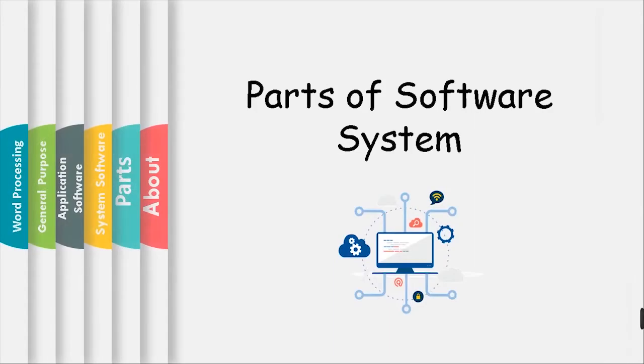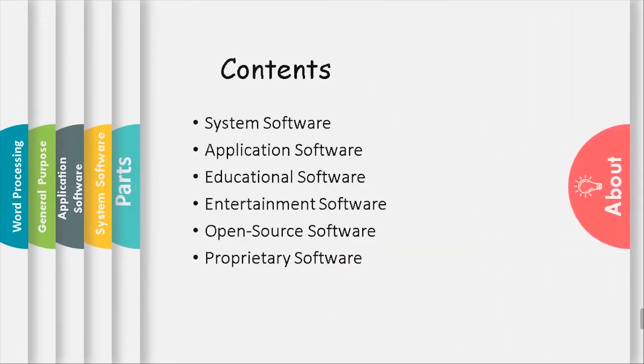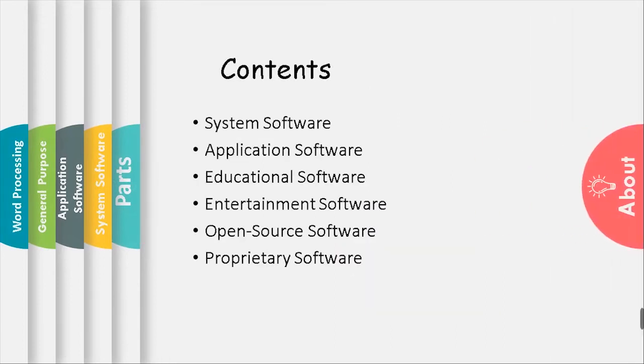The parts of system software include: system software, application software, educational software, entertainment software, open source software, and proprietary software.